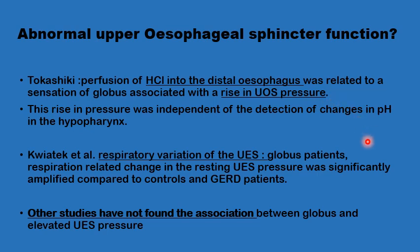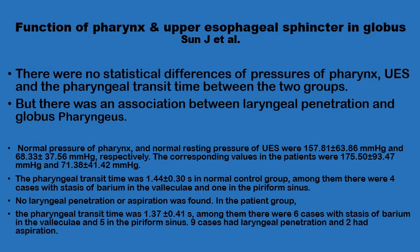It has also been shown that the normal variation in upper oesophageal sphincter pressure with respiration is much amplified in cases of globus sensation. On the other hand, numerous other studies have shown no association between upper oesophageal sphincter pressure and globus sensation. One example showed no difference in pressure in the pharynx, the upper oesophageal sphincter, or in pharyngeal transit time between globus and non-globus patients. The only difference found using simultaneous videofluoroscopy and manometry was more laryngeal penetration in globus patients, but no changes in pressure.